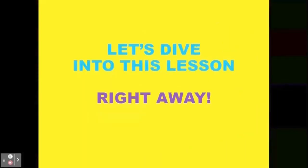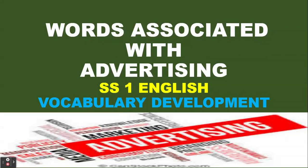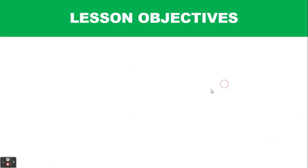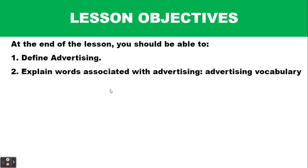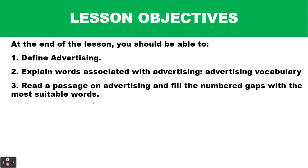Let's dive into this lesson right away. This is Benjamin from English Classes Online. Today we are going to look at words associated with advertising. The lesson objectives: at the end of the lesson, you should be able to: one, define advertising; two, explain words associated with advertising, that is the advertising vocabulary; and number three, read a passage on advertising and fill the numbered gaps with the most suitable words.